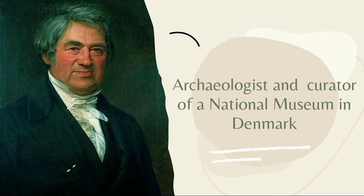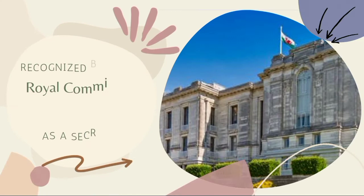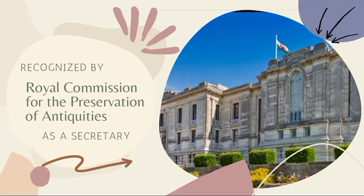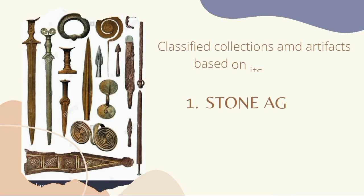When we say curator, his job is to keep and manage the collections. So Christian Jurgensen Thomsen was an organizer in a museum — he arranged and sorted out the collections and exhibits in a timely manner. When he was young, he was only into collecting coins and arranging them by year, from the oldest to the newest. Since he came from a merchant and wealthy family, he was well known in the industry. After that, he was recognized by the Royal Commission for the Preservation of Antiquities as a secretary, for his excellent knowledge in history and arts, and for being a well-organized person.